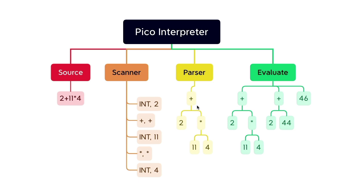Now we parse those to produce the abstract syntax tree. Here we have an operation plus, and on the left-hand side it has 2, and on the right-hand side it has a subtree. That subtree has the operation star, and on the left-hand side it has number 11 and on the right-hand side it has number 4.